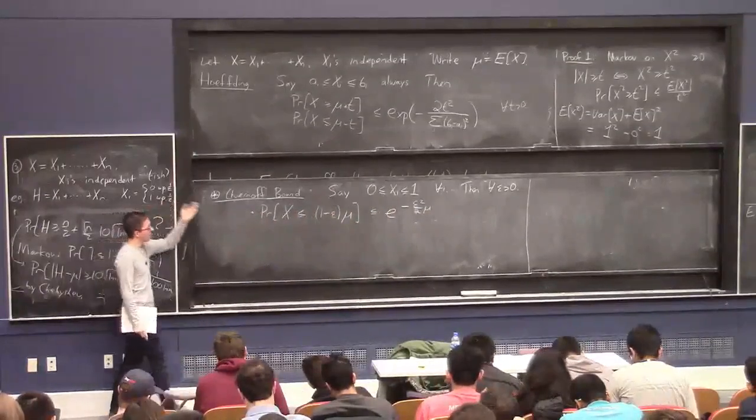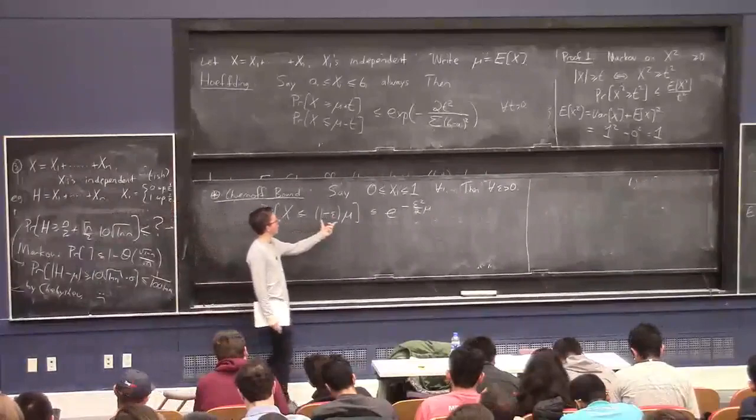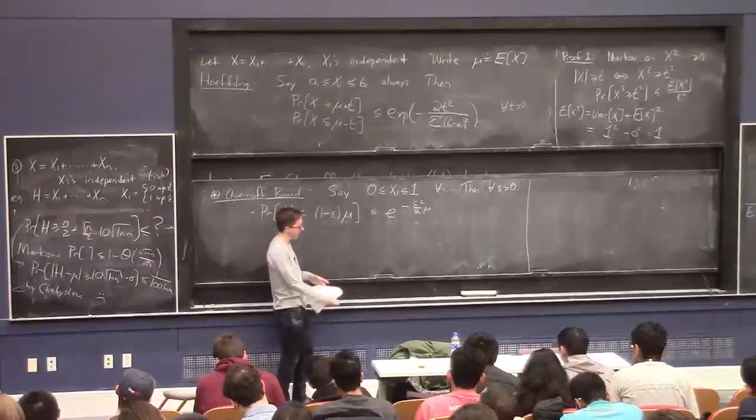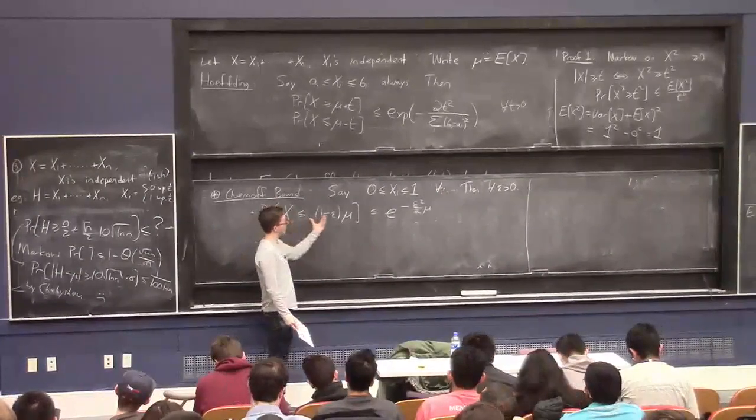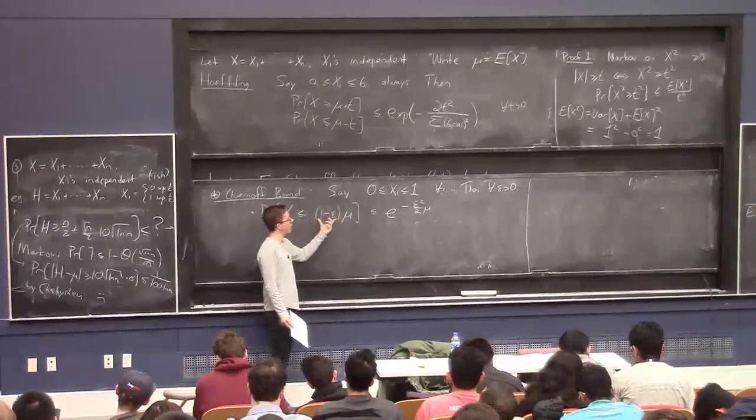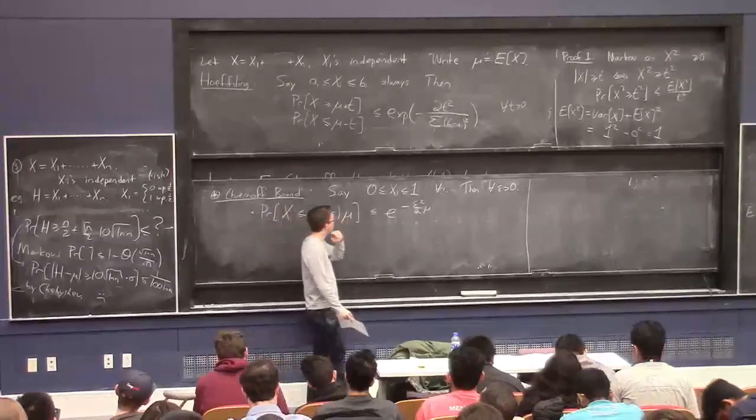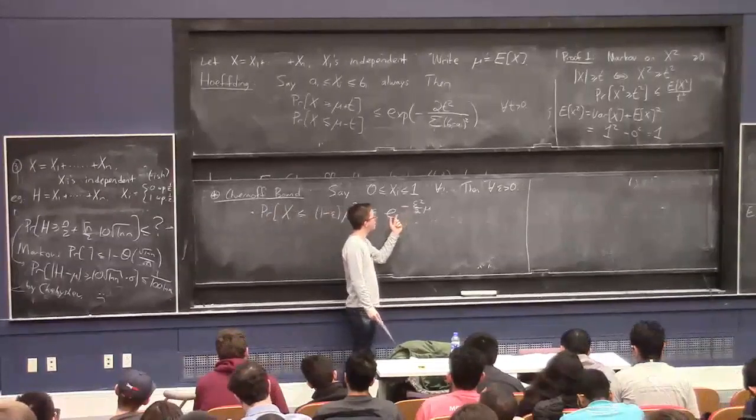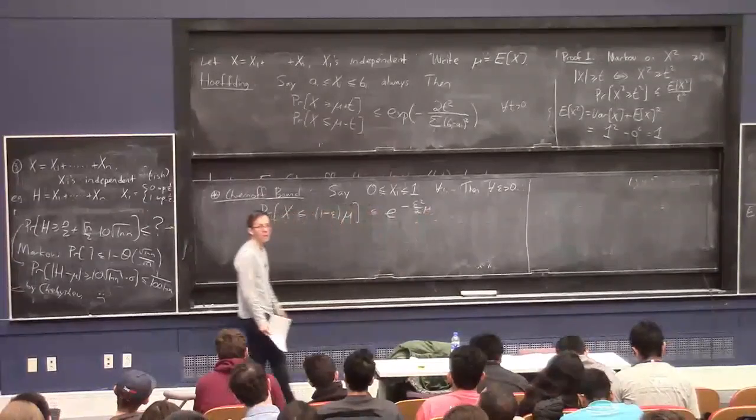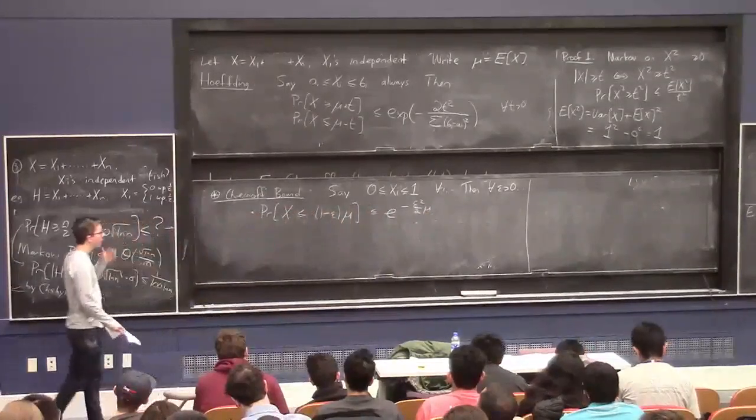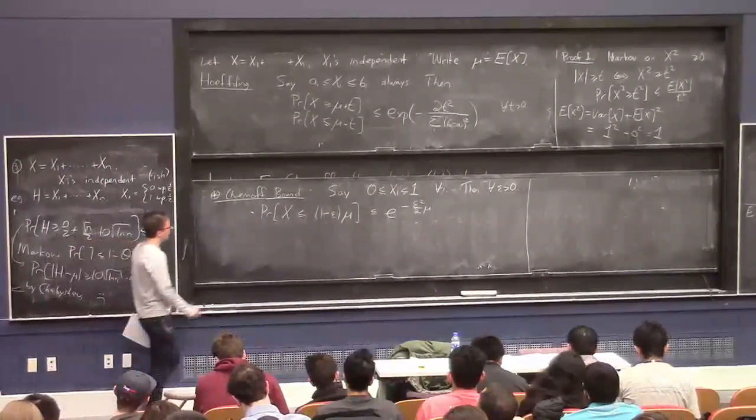So a common scenario, you know, maybe epsilon is 0.01. Mu is proportional to n. And this will say that the probability that this random variable is less than even 0.99 times its mean, it's really small. It's e to the sum constant times n, if the mean is proportional to n. That's quite useful.